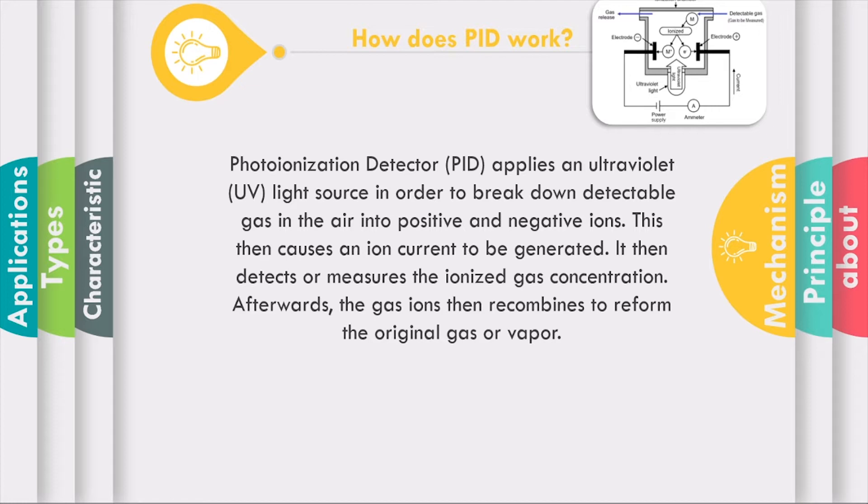It then detects or measures the ionized gas concentration. Then afterwards, the gas ions recombine to reform the original gas or vapor.